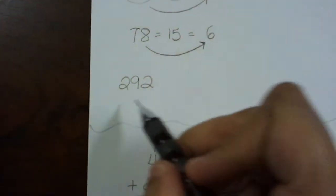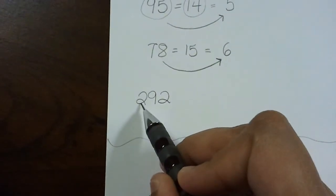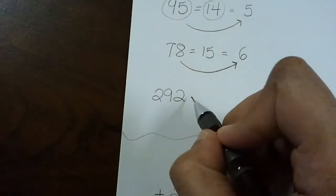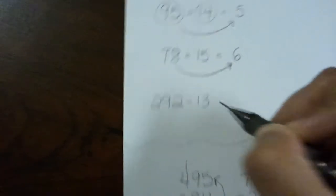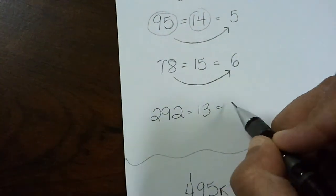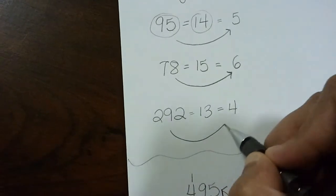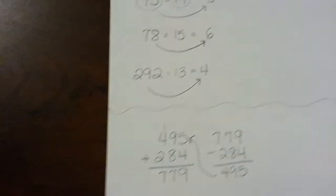Let's look at another one, 292. 9 plus 2 is 11 plus 2 more equals 13. Add 1 and 3 together and you get 4. The digital root of 292 is 4.